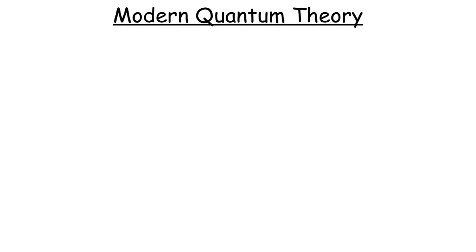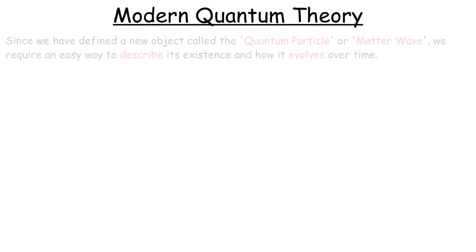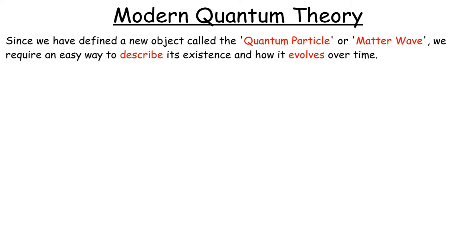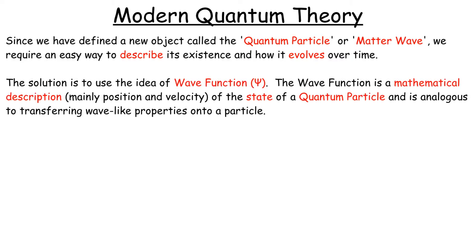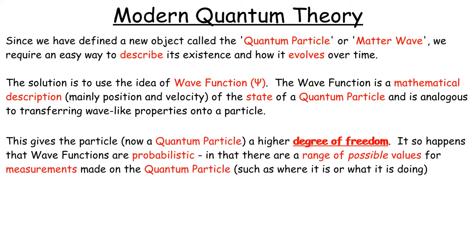Okay, so now that we have our quantum particle, we need a way to describe what it is and how it evolves over time. To do this, we use the idea of wave-function, which is a description, and gives the quantum particle a degree of freedom.